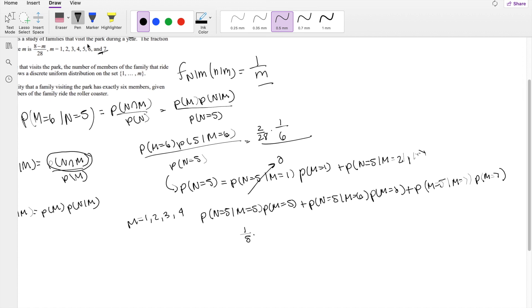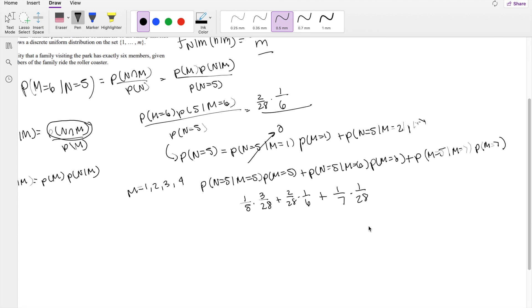Okay, so that's not too bad. We have every ingredient we need. We know this one right here: n is equal to 5 given m is equal to 5. We just have to plug 5 in for this formula here, so that's going to be 1 over 5 times the probability that m is 5, which is right here, 8 minus 5 which is 3, 3 over 28.